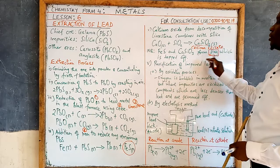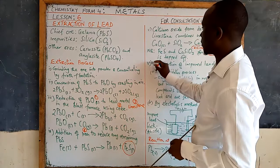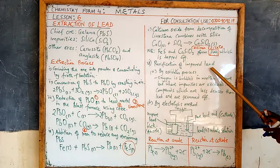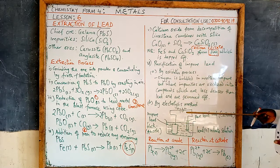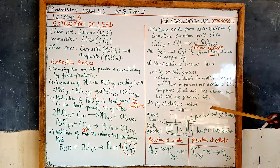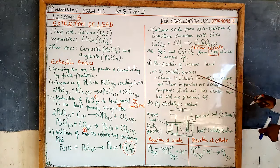Step six is purification of impure lead. There are two ways of doing that — either by the oxidation process, which is similar to that of iron. Extraction of lead is very close to the extraction of iron. Lead is purified by the oxidation process, the same method used for iron.